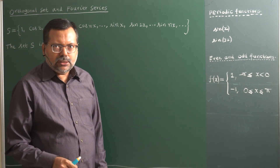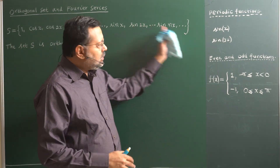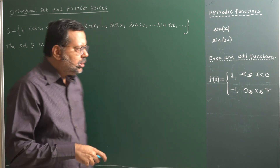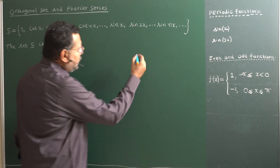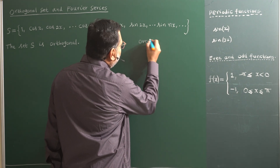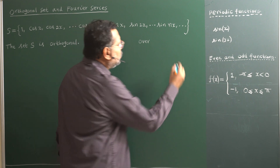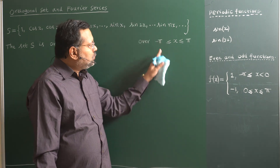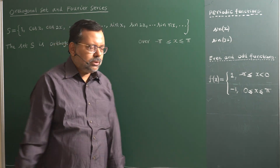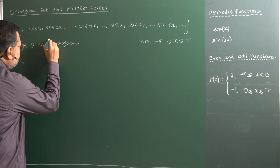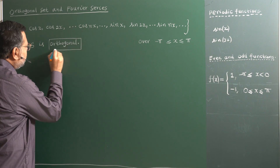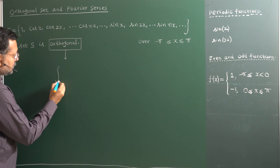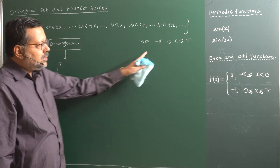An orthogonal set by definition is like this: there are an infinite number of elements in the set. You take any two elements, multiply them, and integrate over some range. Here the range is from minus pi to plus pi, so the total range is 2π. By the fundamental definition of orthogonality, we perform an integration between the defined limits — for this problem, from minus pi to plus pi.